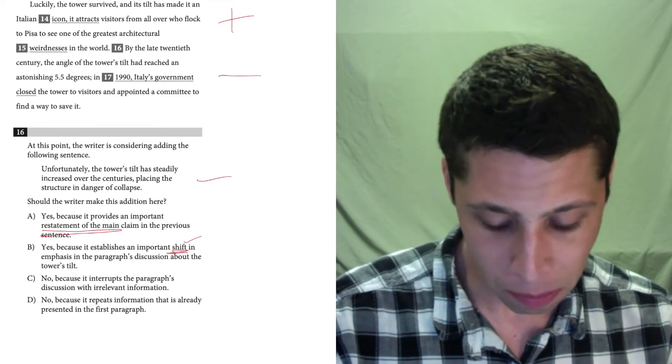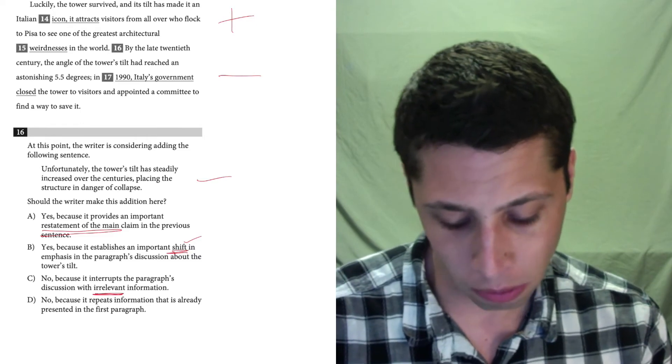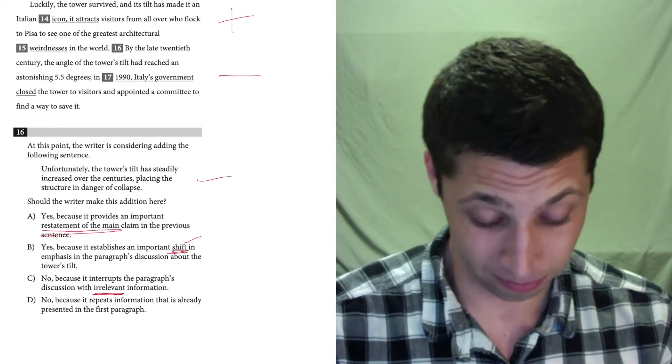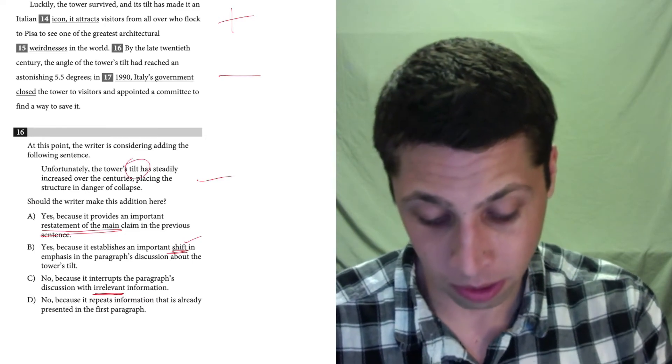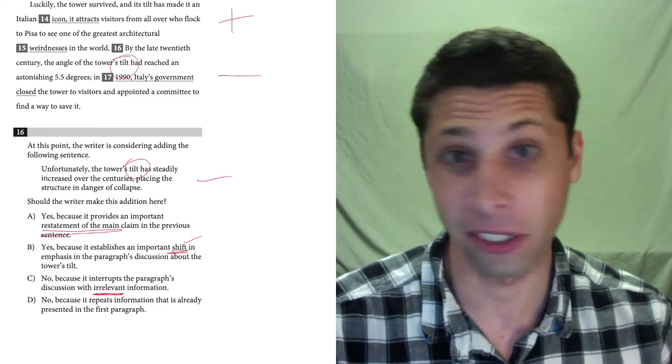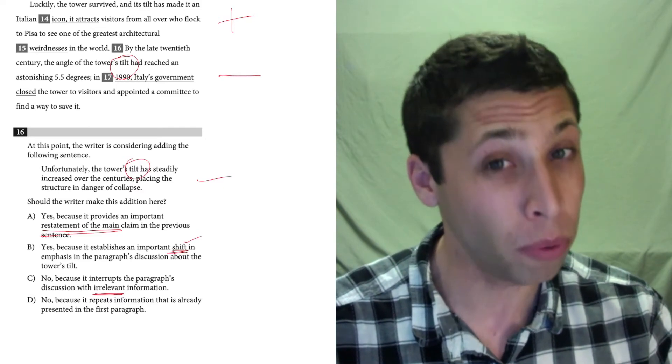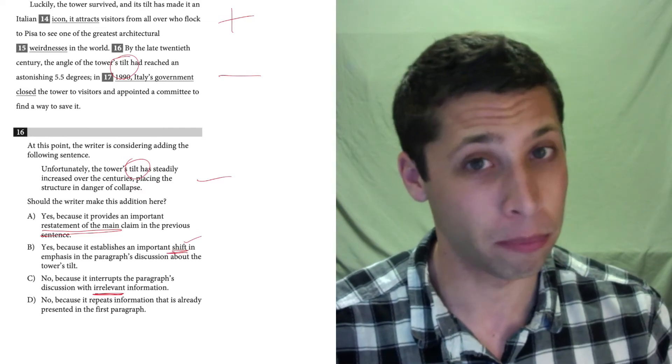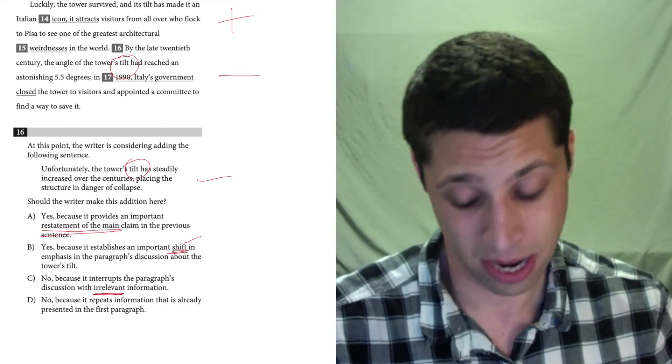C, no, because it interrupts the paragraph's discussion with irrelevant information. That's a little strong. I don't think it's irrelevant. It's talking about the tilt. Right? The tilt. The next sentence is talking about the tilt. That seems relevant to me. So irrelevant is a very strong word. It would really need to be random for me to want to pick that. It's relevant enough.